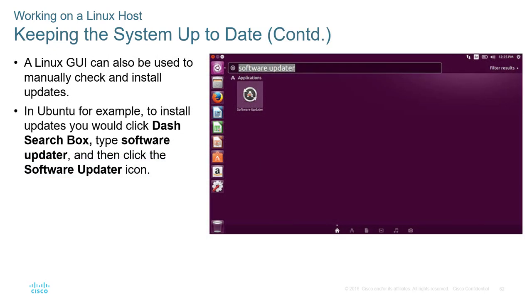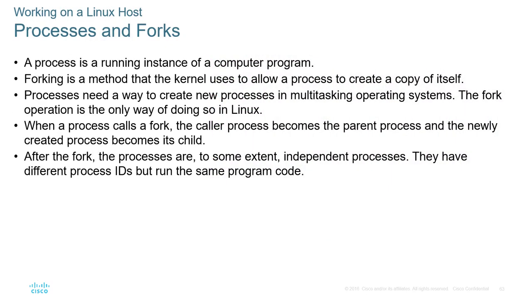If you have a GUI, there's also a software updater available. A process is the running instance of a computer program, while a fork is the method the kernel uses to allow a process to create a copy of itself. In a multitasking OS, the fork operation is the only way for Linux to create new processes. When a process calls a fork, the calling process becomes the parent and the new process becomes its child.